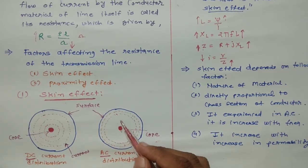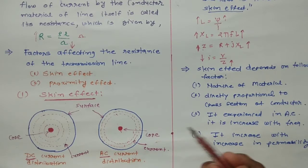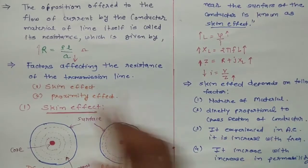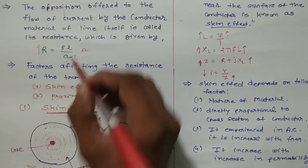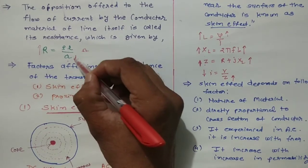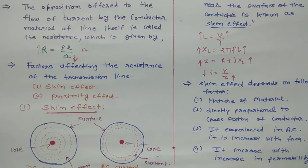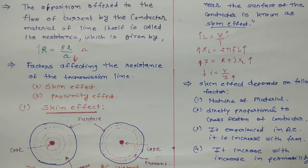The effective cross-sectional area utilized for current flow is reduced. Since R = ρl/A, if area is reduced then resistance is increased, and if resistance is increased then power loss is increased. That is the factor affecting the resistance of the transmission line due to skin effect, and that is its disadvantage.